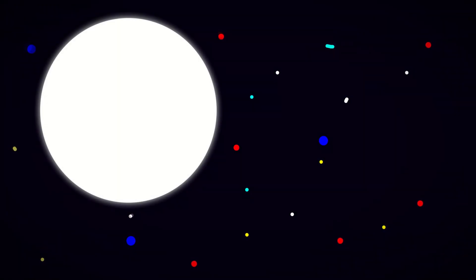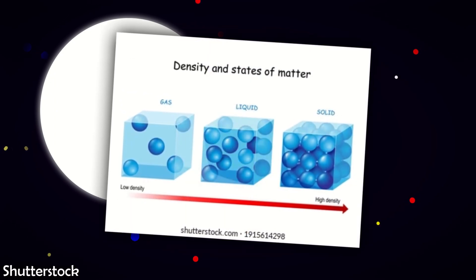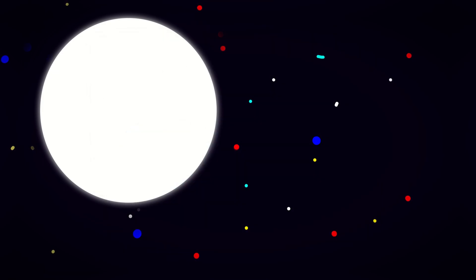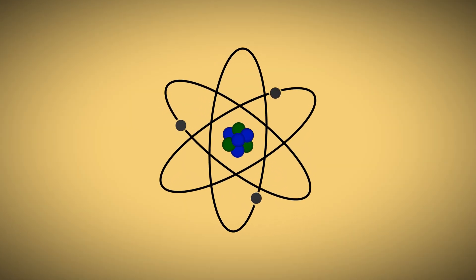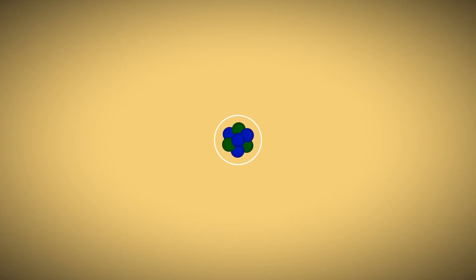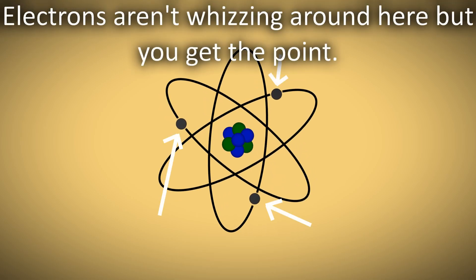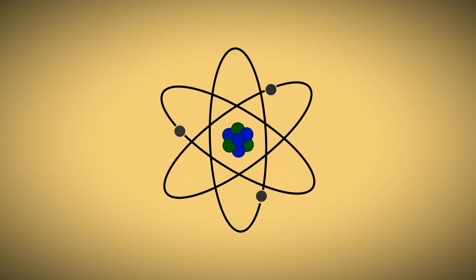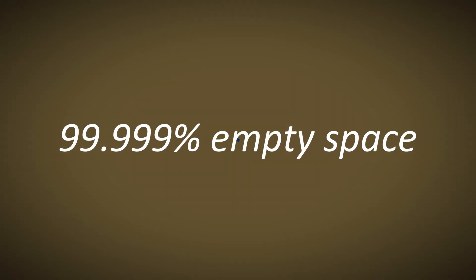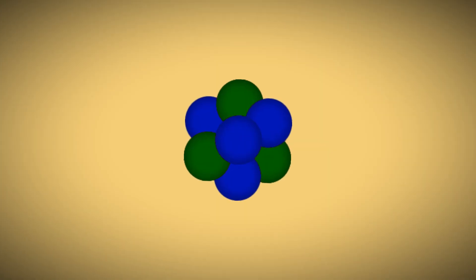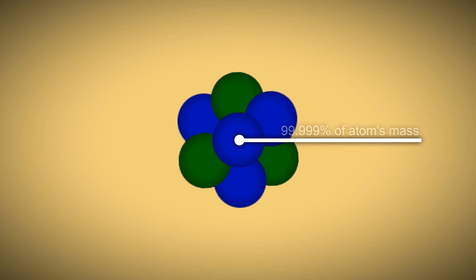Hopefully, you remembered from earlier that neutron stars are one of the densest objects in the universe. Because we are about to dive into an atom. As you can see, an atom has a nucleus of protons and neutrons, and a bunch of tiny electrons whizzing around. This image is not up to scale. Let's make it up to scale. There we go. As you can see, atoms are 99.999% empty space. The nucleus takes up barely any space, but they make up almost all the mass of an atom.